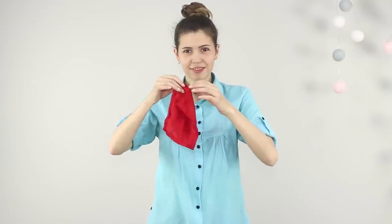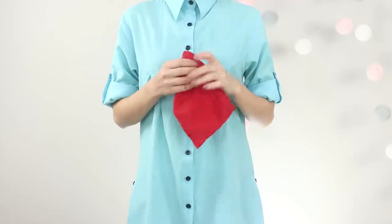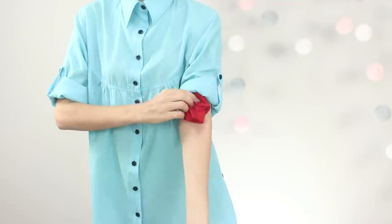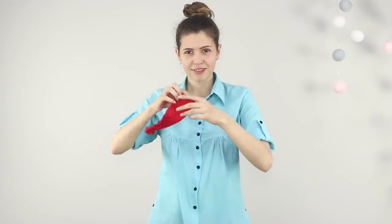Tricks with an unexpected appearance of objects look very spectacular and mysterious. A bright piece of cloth appears in the magician's empty hands. Has it really come out of thin air? The secret is to hide the handkerchief in the sleeves rolled up to the elbow before demonstrating the trick. At the right moment, sharply throw your hand forward and intercept the handkerchief with your fingers.